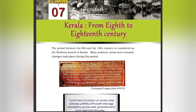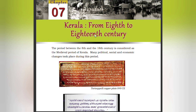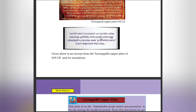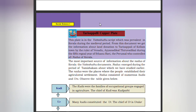Hello, dear students. Welcome to Teacher at Home. Today's class covers the seventh chapter: Kerala from the 8th to 18th century. The period between the 8th and 18th century is considered the medieval period of Kerala. Many political, social, and economic changes took place during this period. Given above is an excerpt from the third Tharisapalli copper plate of 849 CE and its translation, written in the Vattezhuthu script, which was prevalent in Kerala during the medieval period.